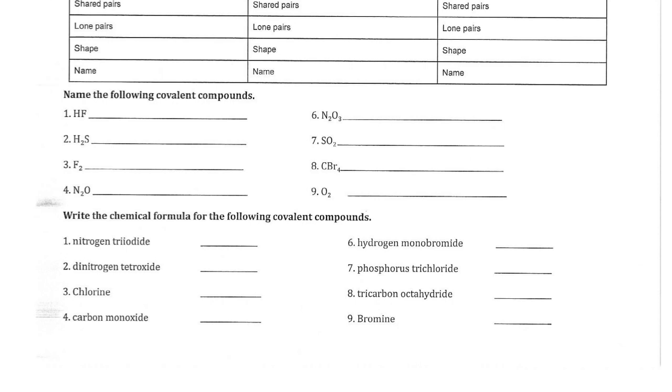Name the following covalent compounds. So if we just have an element by itself to start it, we can just say that element's name. We don't have to say mono for the first one. So hydrogen. But now for the second one, we do have to say mono if it's one. Mono, and then we turn it from fluorine to fluoride. Hydrogen monofluoride. I'll just do the rest of these out loud. Dihydrogen monosulfide. This is difluorine, which you can just call fluorine, but I like difluorine better. Dinitrogen monooxide. Dinitrogen trioxide. Sulfur dioxide. Carbon tetrabromide. And then just oxygen or dioxygen.